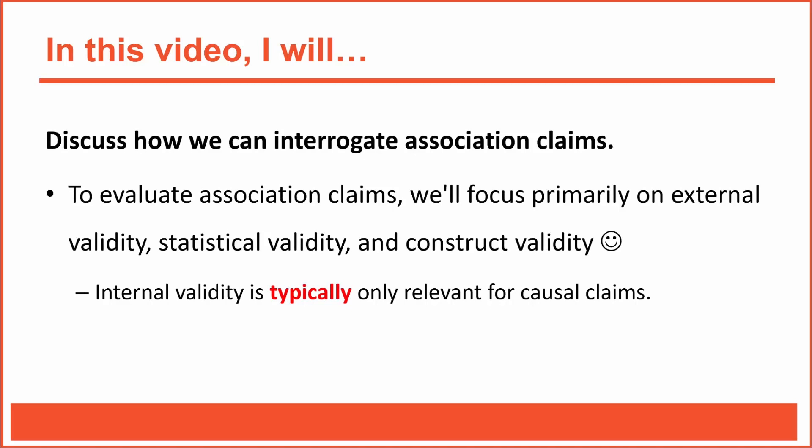In the last video, we discussed how to evaluate frequency claims. Frequency claims describe outcome data for one single individual variable. Association claims are fundamentally different, so it's easy to distinguish them from frequency claims. Association claims typically emerge from correlational research studies, where two or more variables are measured.